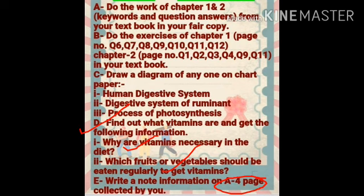You have to write about what vitamins are, then explain why vitamins are necessary in our diet, and then write which fruits and vegetables, when eaten regularly, provide vitamins. Write all of this on one A4 sheet. First write the question 'What are vitamins?' and its answer, then write 'Why are vitamins necessary in the diet?' and its answer, and finally write 'Which fruits and vegetables should be eaten regularly to get vitamins?' and its answer.